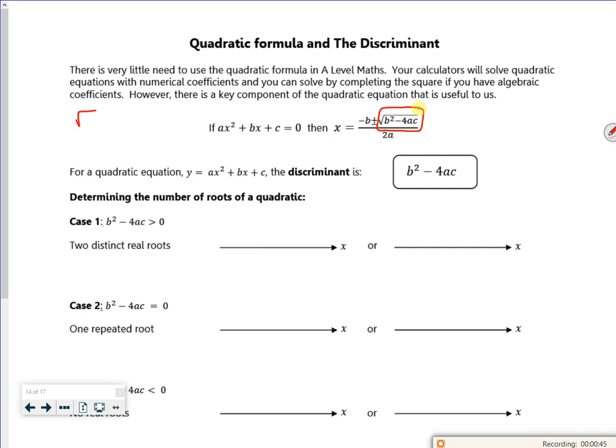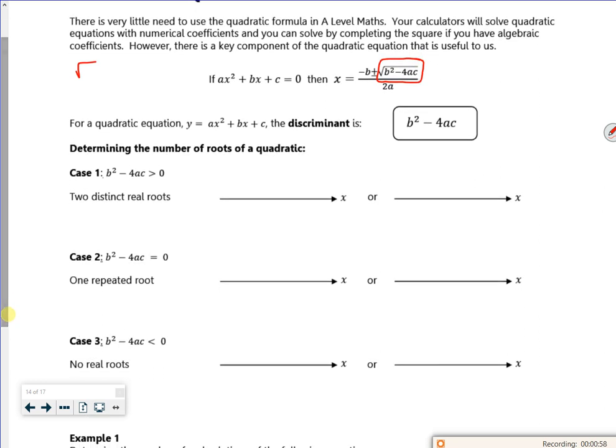If it was equal to zero, it got rid of the whole square root bit and you're just left with one number. And then if the inside that square root was negative, then you said you had no roots. So the bit inside that square root is really, really important. The b squared minus 4ac. And that's called the discriminant.